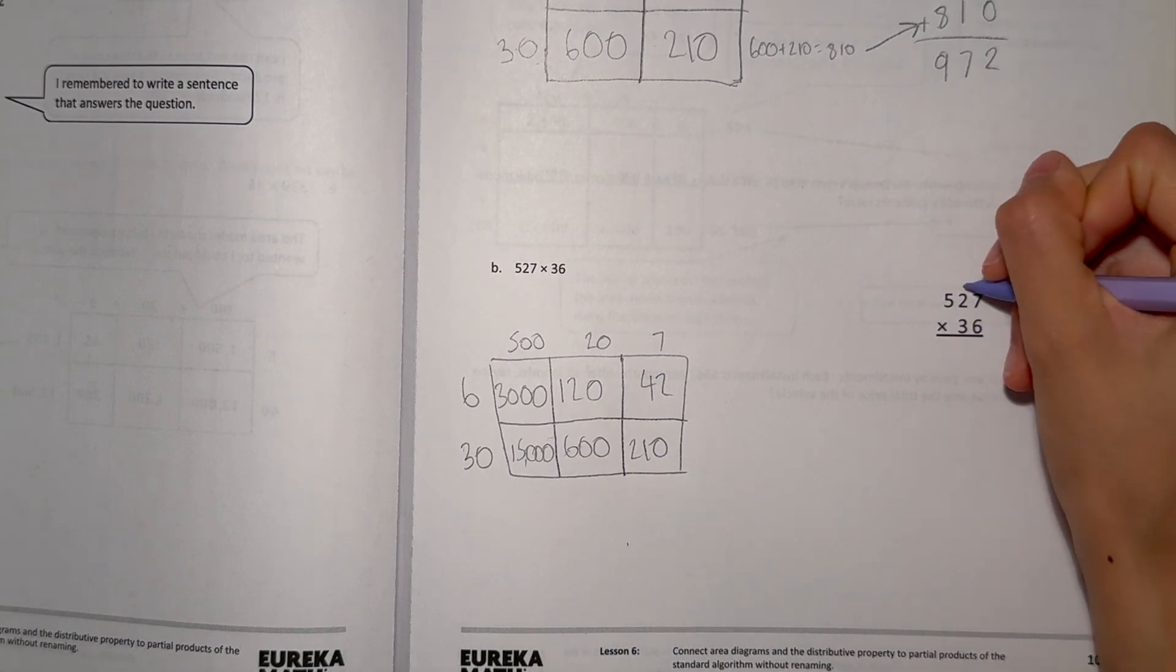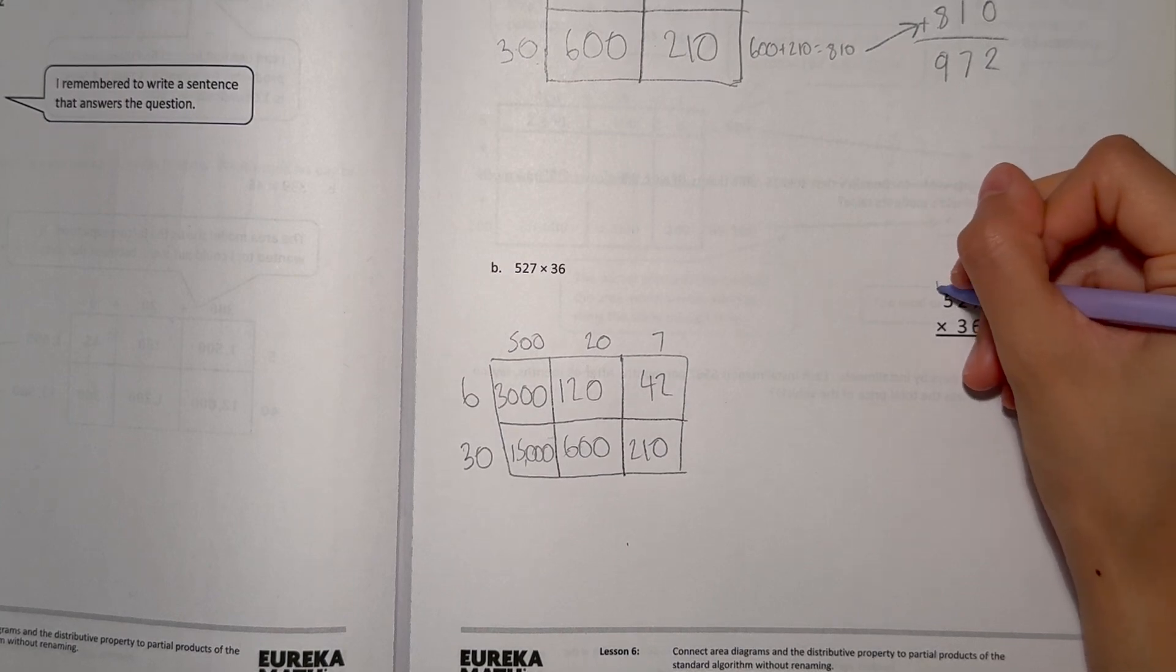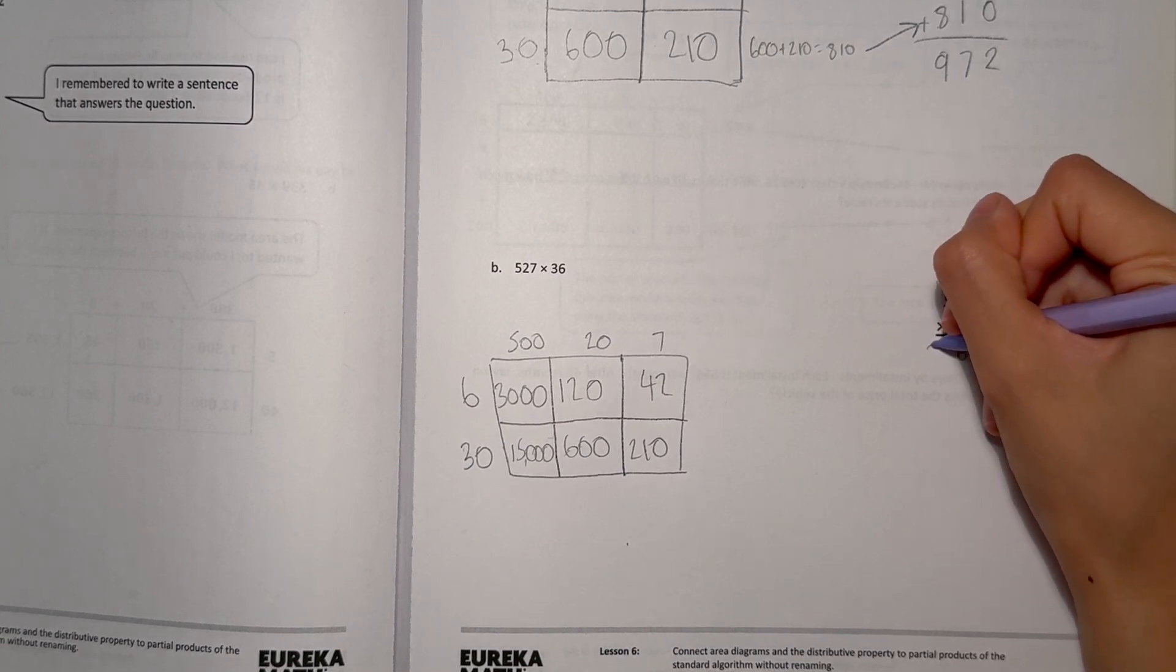Alright, so let's now do our standard algorithm. 7 times 6 is 42. 2 times 6 is 12. Plus 4 is 16. And 5 times 6 is 30. Plus 1 is 31.